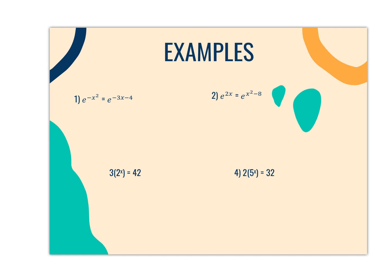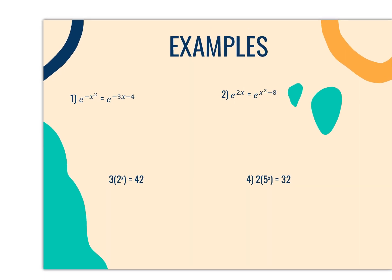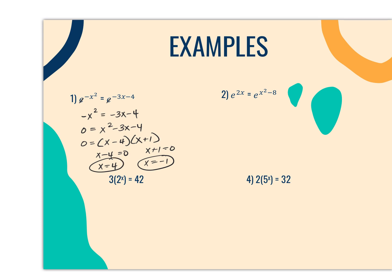In problems 1 and 2, we have exponential functions where the variable is in the exponent spot. In problem 1, notice the base is e on both sides, so since the bases are the same, we just take the exponents and set them equal to each other. It's a little different in that we now have x squared, making it quadratic. You set it equal to 0, move x squared to the other side, and factor x squared minus 3x minus 4, which is (x minus 4)(x plus 1). Setting each factor equal to 0 gives x = 4 and x = negative 1.